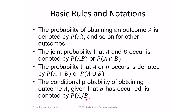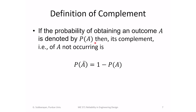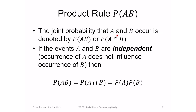Similarly, we define the complement. If I have an event A with probability P(A), then A not occurring is denoted A-bar, or A complement. The probability of A complement is 1 minus the probability of A. That is the definition of complement. The joint probability that A and B occurs is denoted P(AB) or P(A ∩ B).